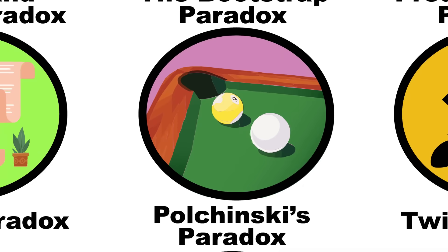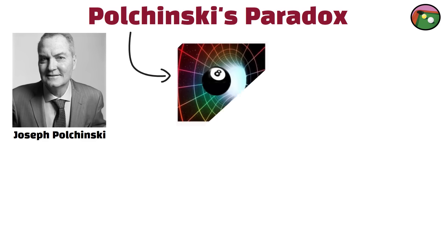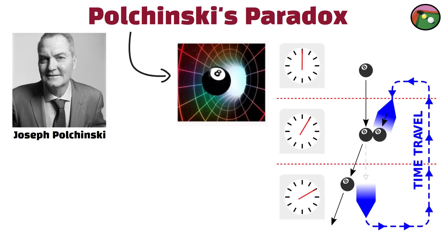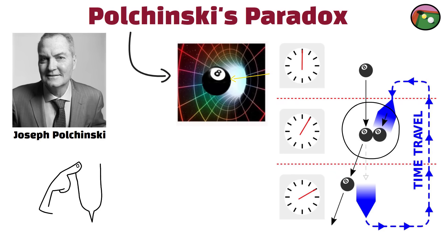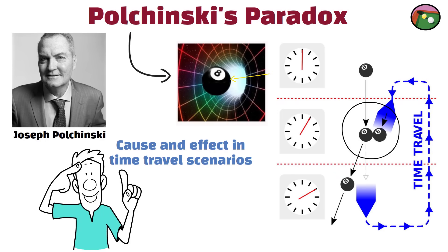Named after physicist Joseph Polchinski, this paradox involves a billiard ball entering a wormhole, emerging in the past, and colliding with its younger self, preventing it from entering the wormhole in the first place. This creates a logical inconsistency where the ball both does and does not enter the wormhole. The paradox challenges our understanding of cause and effect in time travel scenarios.